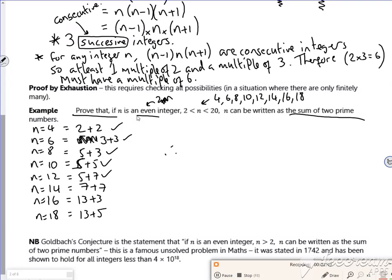Therefore, if n is an even integer, 2 less than n less than 20, it can be written as the sum of two primes.